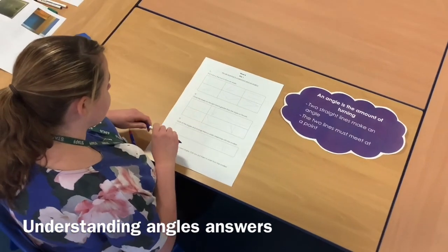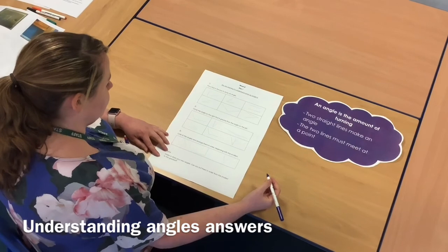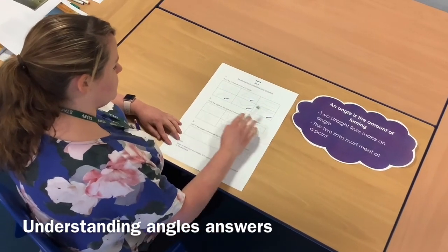So question number one, put a tick in the box to show an angle. So hopefully you got these four.